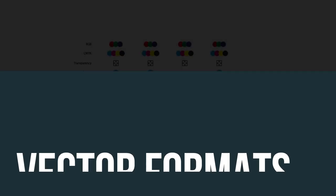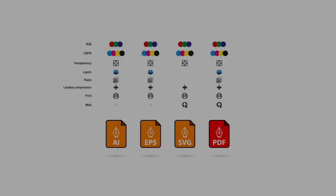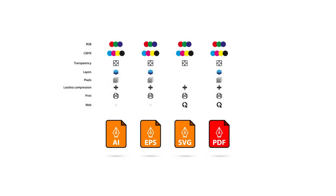Vector file formats are incredibly flexible — they allow you to store colors in both RGB and CMYK and offer transparency. Among some of the more popular vector file formats is Adobe's AI format, used and authored inside of Adobe Illustrator, which will allow you to store content in multiple layers.